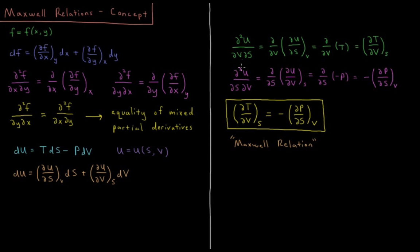And through the equality of mixed partial derivatives, these two values must be equal to each other. So the partial derivative of the temperature of a system with respect to the volume at constant entropy equals the negative partial derivative of the pressure with respect to the entropy at constant volume.